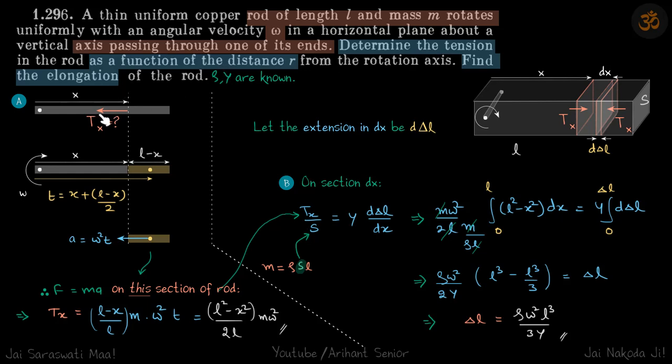Just like the previous problem, because it's rotating about this axis, the tension here is going to be maximum because that tension is responsible for the centripetal acceleration of the whole rod. As you move away, the tension is going to be less and less. If stress is reducing, the strain on that section will also reduce, so we cannot directly write the strain for the whole rod. We need to integrate.